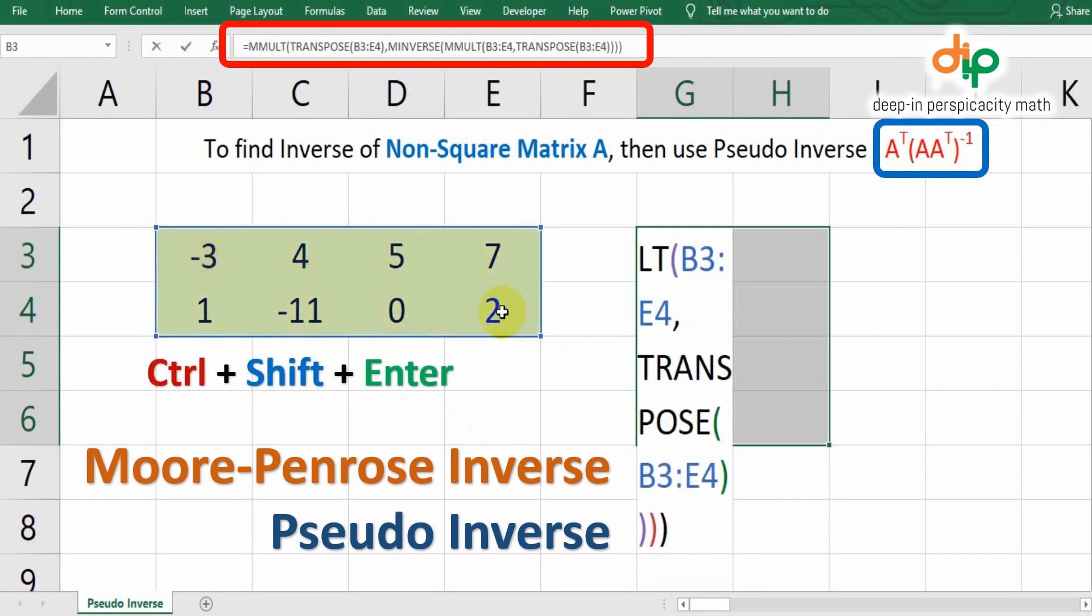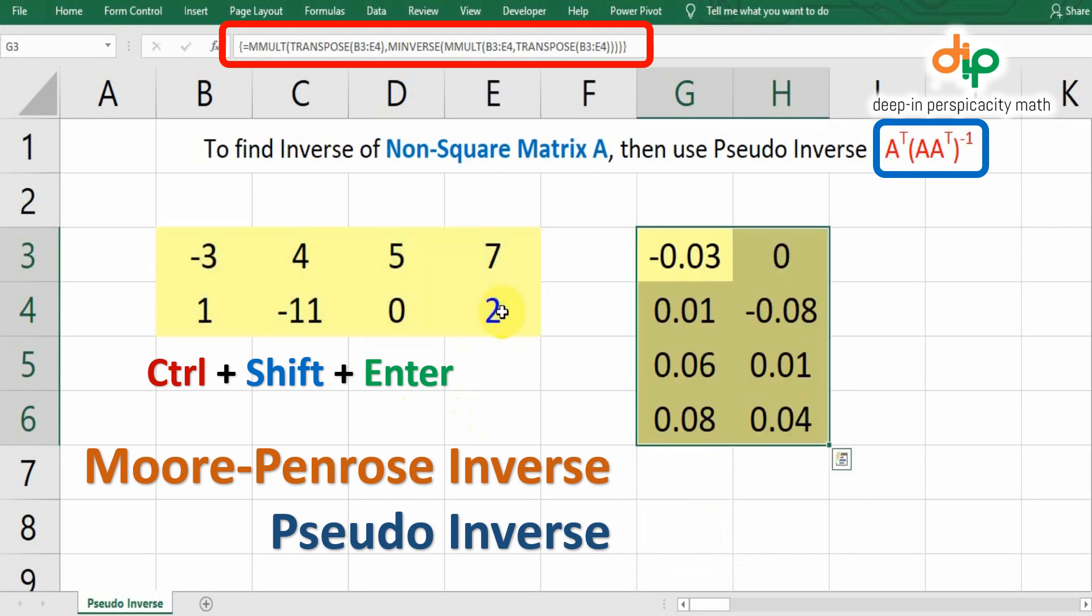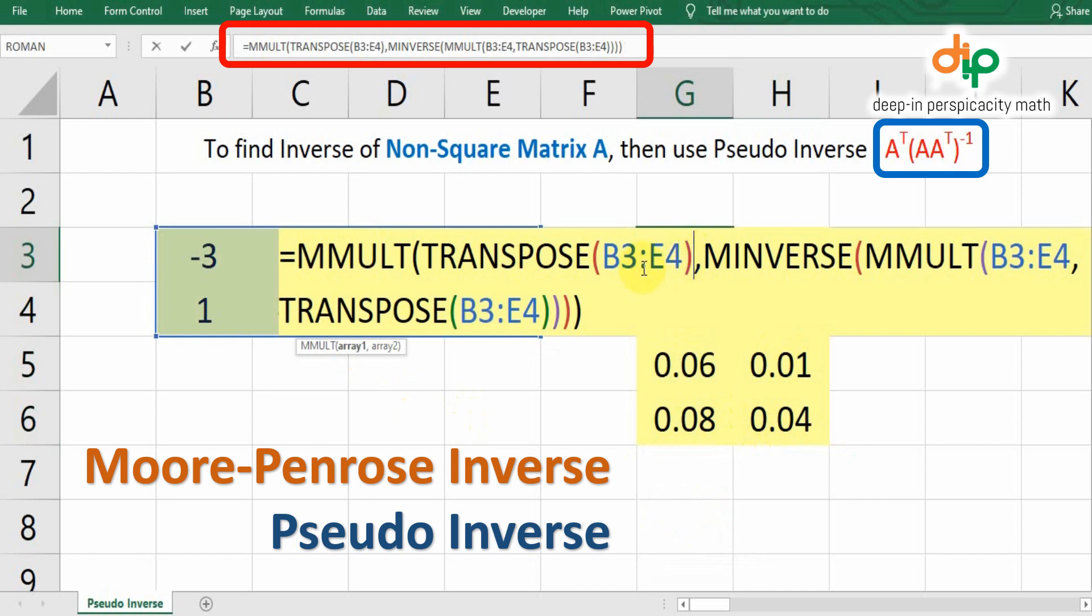Please remember to press Ctrl, Shift, and Enter button simultaneously to complete the array number calculation. You may pause this video to review the Excel combination formulas.